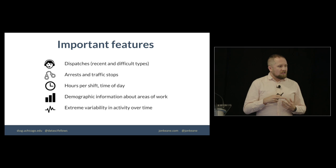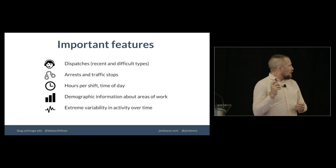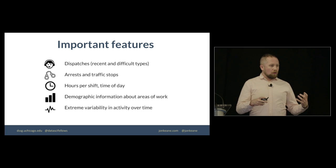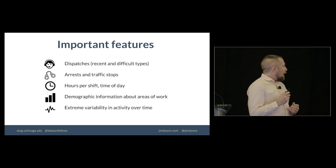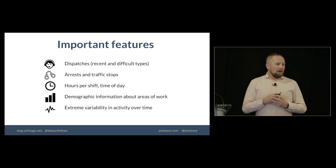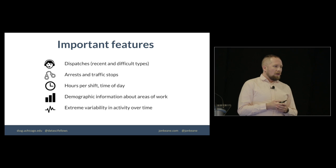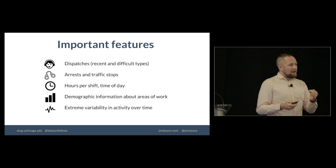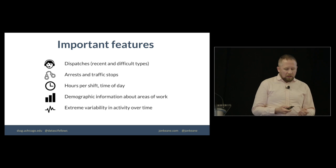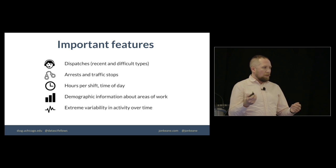Hours per shift, so officers that worked longer were at a higher risk. Demographic information about where the officers were patrolling tended to be correlated. And finally, extreme variability in activity over time was correlated with having an increased risk. So that officer that had only three arrests, that's very unlike a lot of other officers, and that's a type of variability that has been since incorporated into our models.